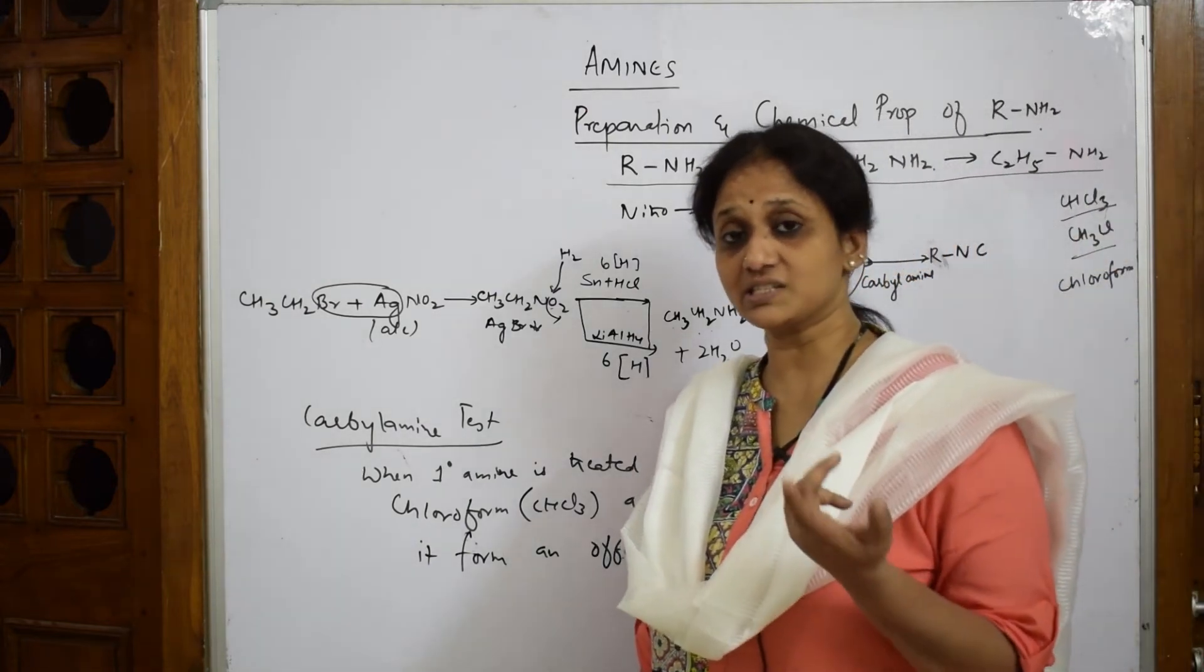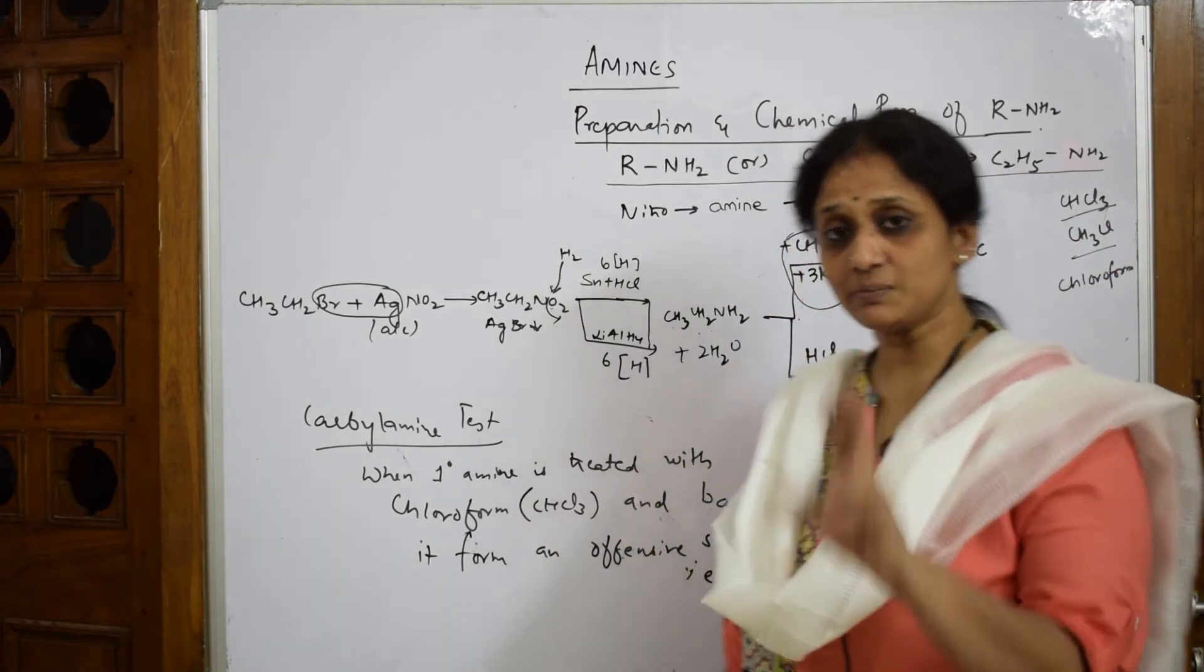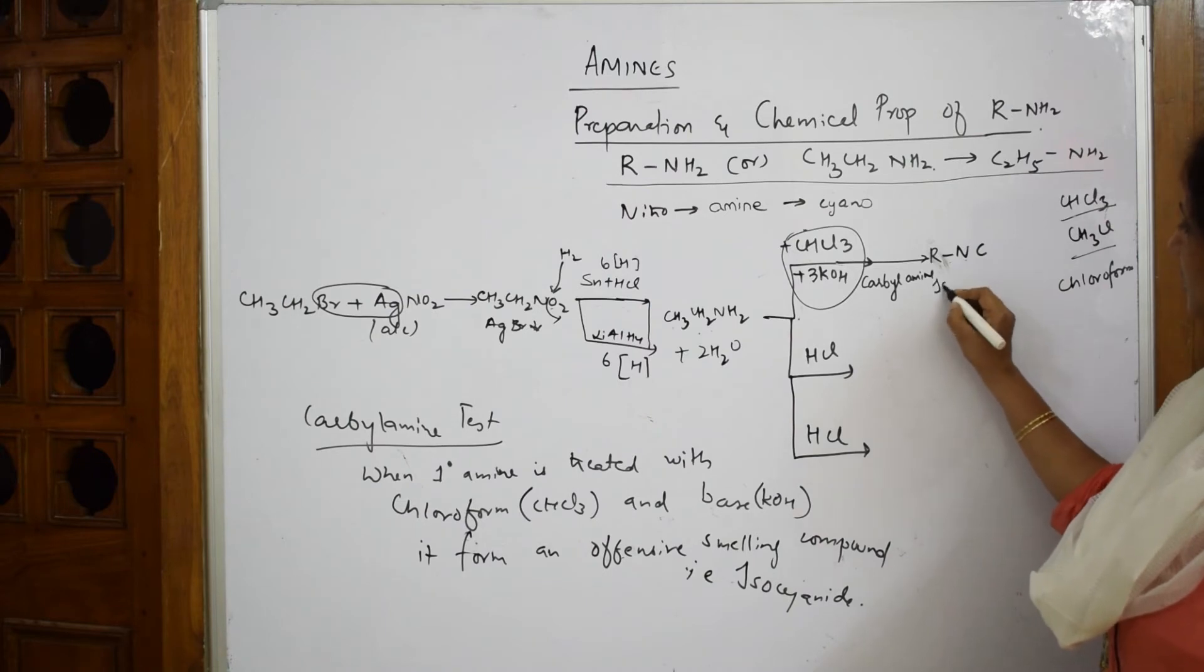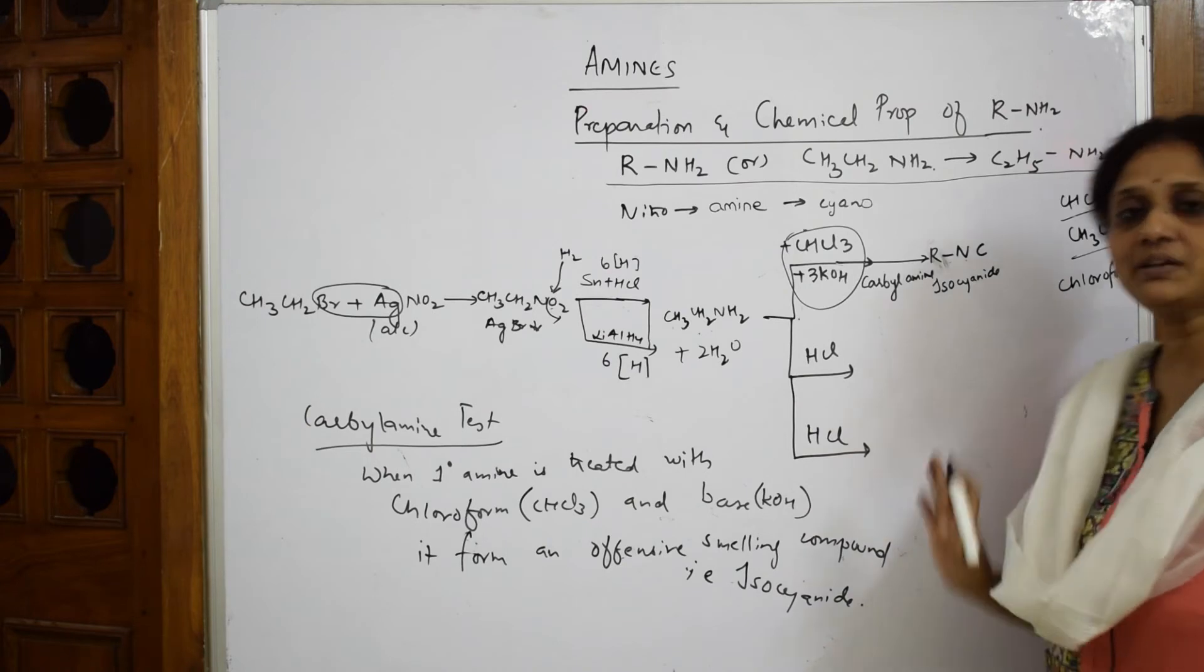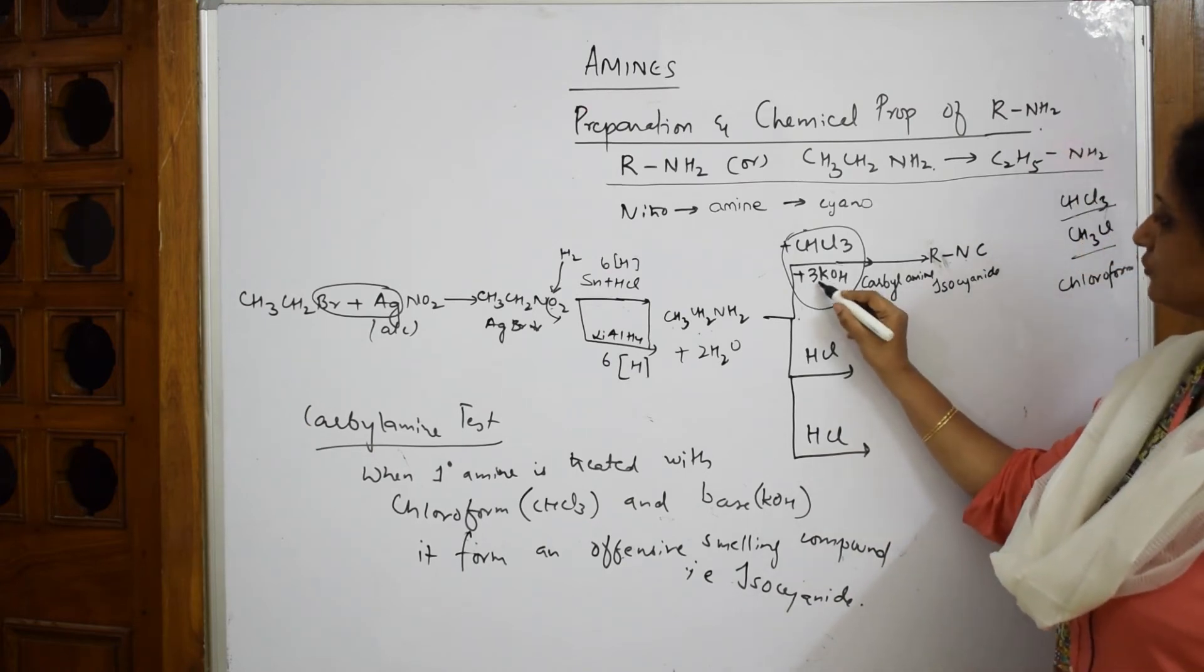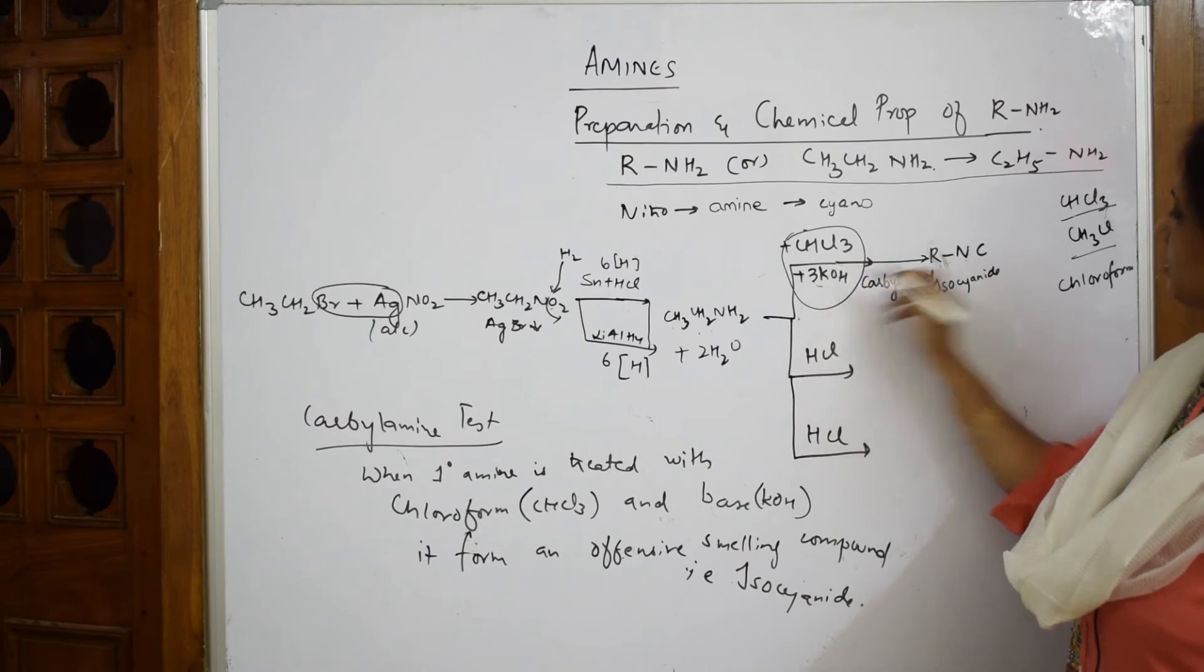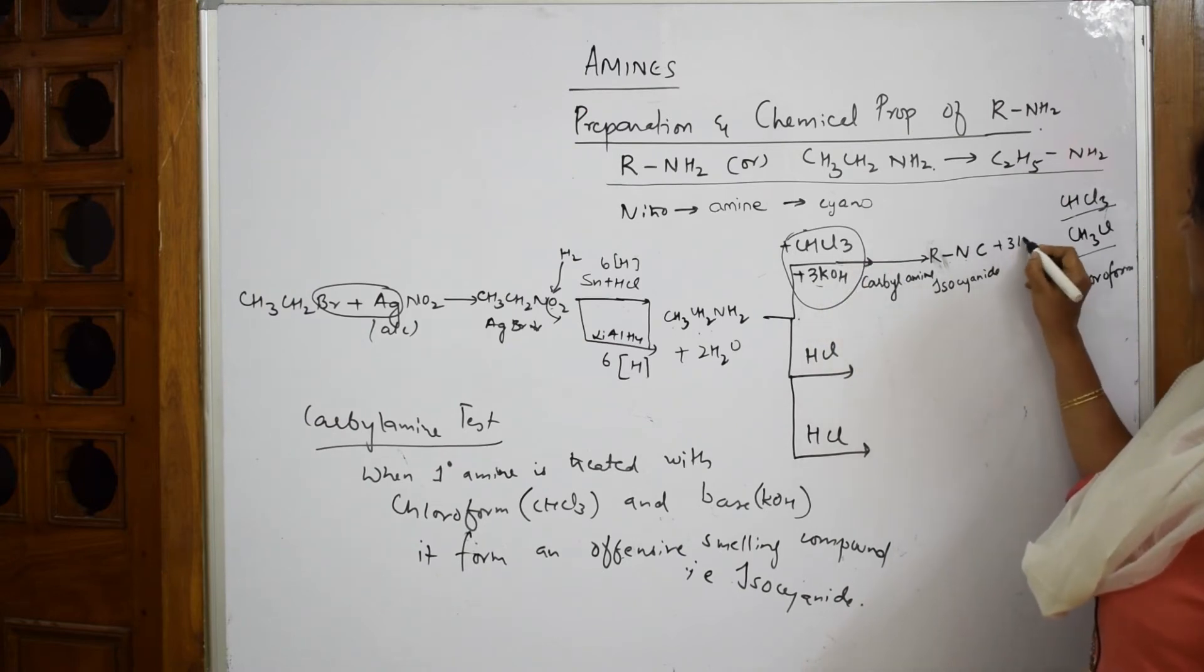NH2 will turn into a compound called R-NC, which is bidentate. Both sides it can, from C you know then C, because it is bidentate like that, it's getting attacked to a highly electronegative nitrogen atom. So this is called isocyanide compound or carbylamine reaction. Along with that you have three KCl and three water molecules.